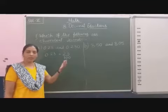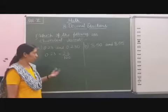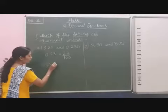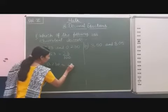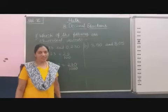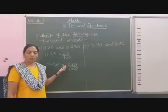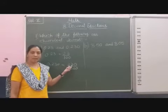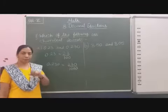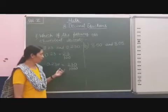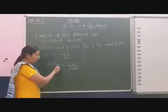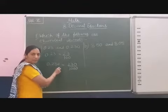The second decimal number given is 0.230. We can write 230 by 1000, because here 2 is on the tenths place, 3 is on the hundredths place, and 0 is on the thousandths place. Now students, one more thing I want to add — when we add this 0 on the thousandths place.